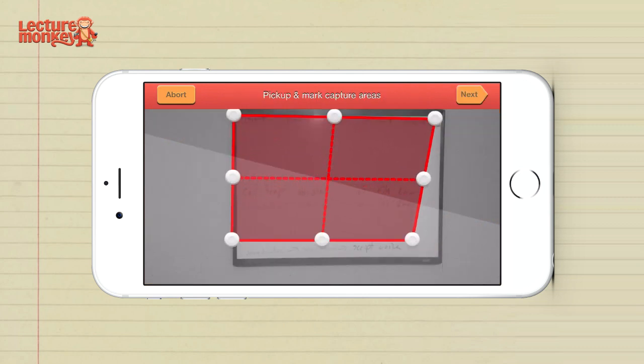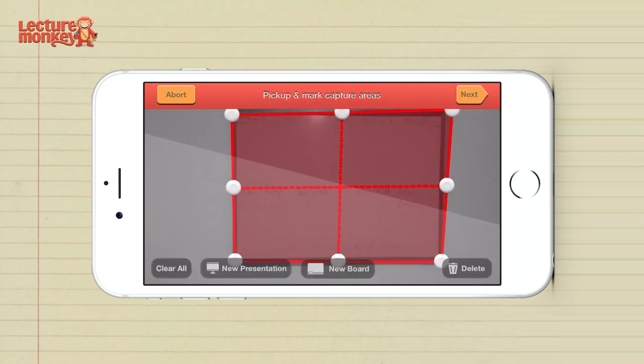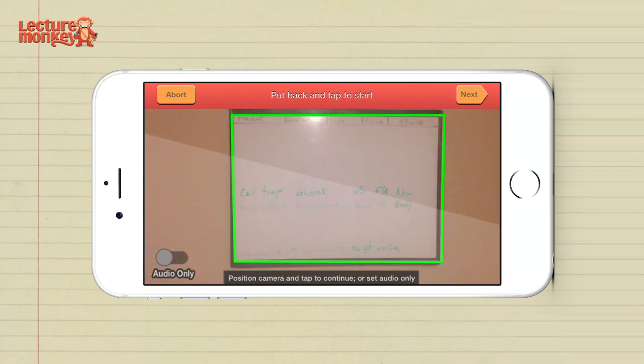Select the exact areas you want Lecture Monkey to record, for example, just the blackboard. Put the camera in place and the lecture will automatically record.